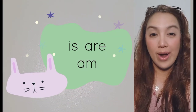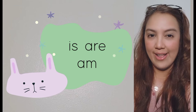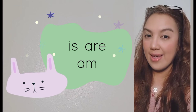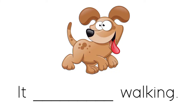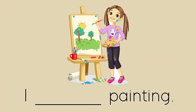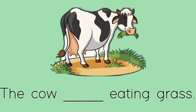Now let's try to do some drills. Let's answer some sentences using is, are, or am. It is walking. They are playing. I am painting. The cow is eating grass.